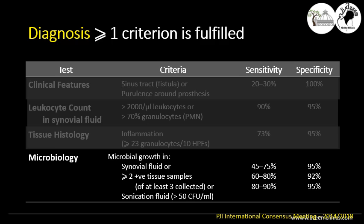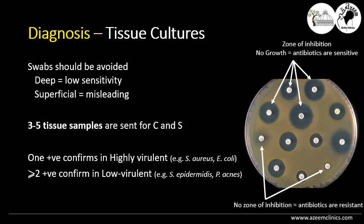Detection in tissue biopsy of high specificity and high sensitivity. We should rely only on deep biopsies. Swabs, whether superficial or deep, are of low sensitivity and misleading and should be avoided. Usually we take three to five tissue samples and send them for culture and sensitivity during the operation. One positive sample for a high virulence organism is diagnostic, like Staph aureus and E. coli. For low virulence organisms, two or more positive samples are diagnostic.